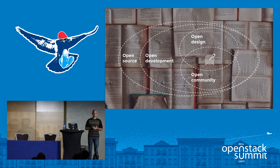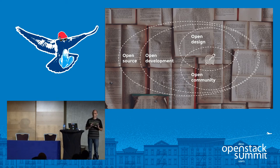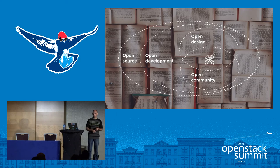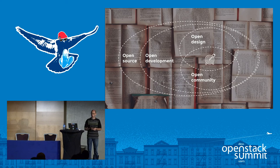A lot of projects do open source today — everyone does open source. Not so many do open development, but a lot do. It's pretty rare that they do open design; most open source projects have some central group of developers that sets the direction, and everyone else is there to just fix bugs. Open community is also something we are fighting to keep, because the newest open source foundations have a more direct link between the sponsors and the leadership of the project. I think the way we set it up in OpenStack is the most long-term and healthy for long-term survival of our project.